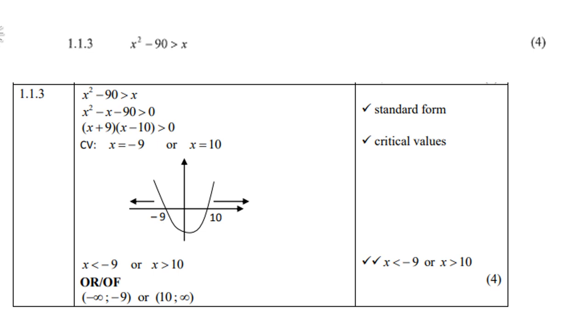So please take your x to the left hand side, factorize, and you get (x + 9)(x - 10). Make sure your factors are done correctly. Then you get your critical values CV, so x = -9 or x = 10. Remember these are not the solutions, it's only the critical values or the critical points. So plot them on the number line, -9 and 10.